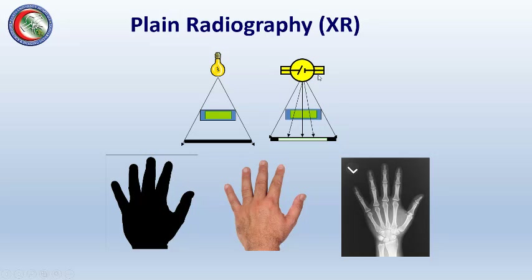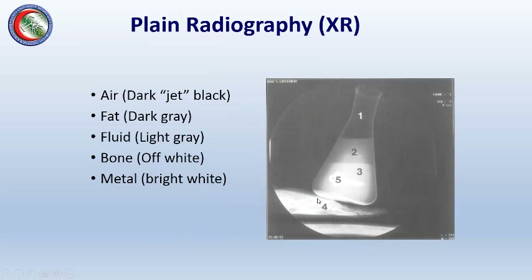X-rays, however, are like a special light we cannot see but which can penetrate body parts. They give us a shadow of the body parts they pass through — not just the outline, but the internal structure of bones, as seen by X-ray which penetrated the body and gave us this image.